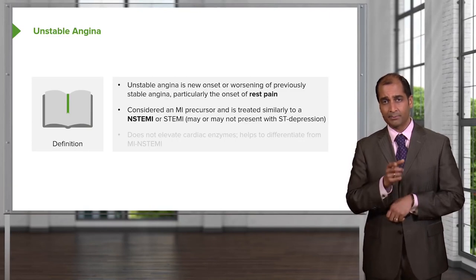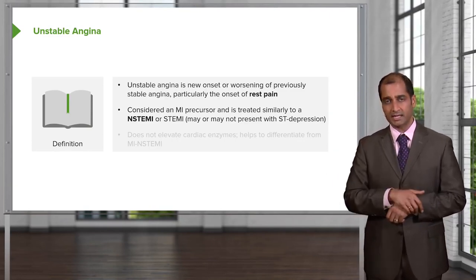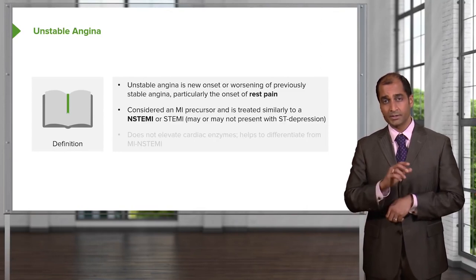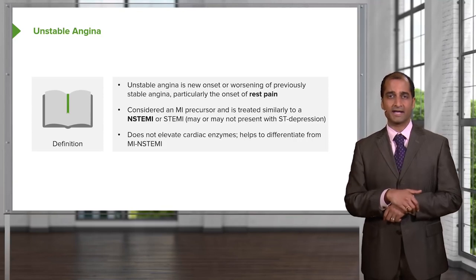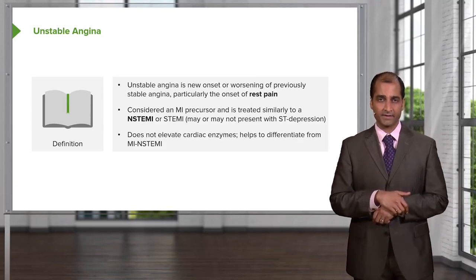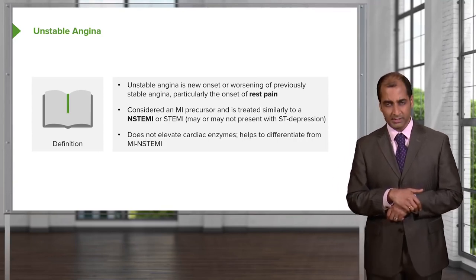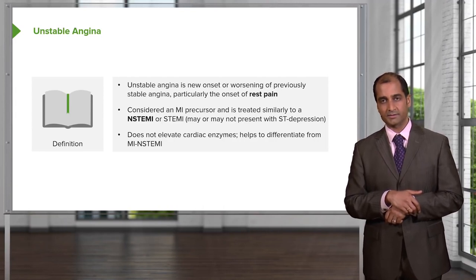Unstable angina is considered an MI precursor — you're crescendoing towards an MI. So you might find a non-STEMI, which means an ST depression, but will you find a cardiac enzyme to be elevated in unstable angina? No, you will not. We discussed that earlier.